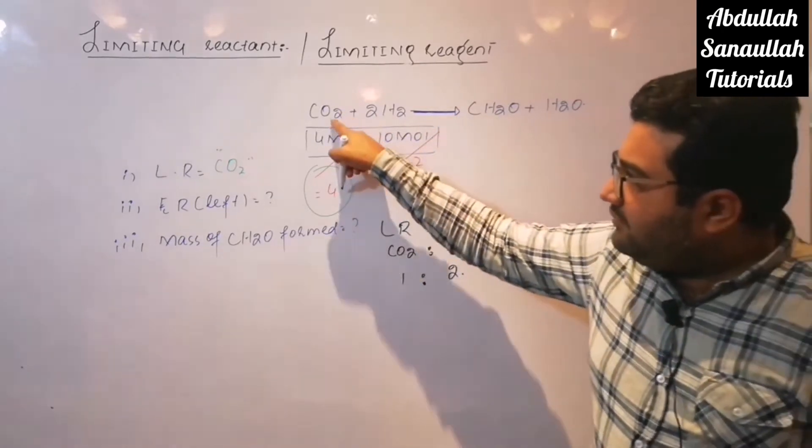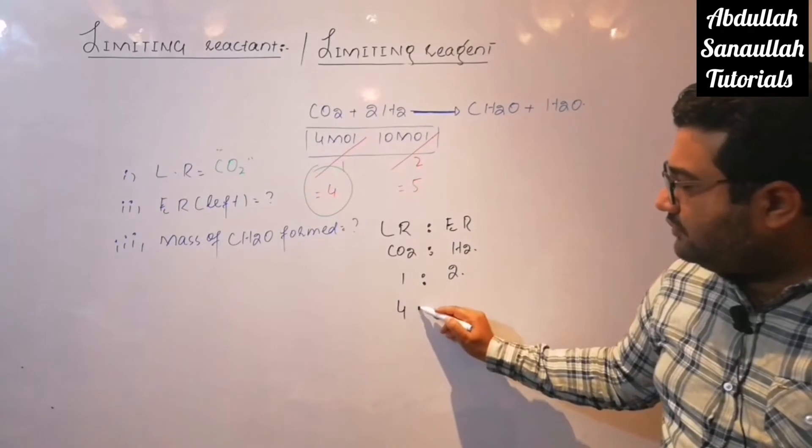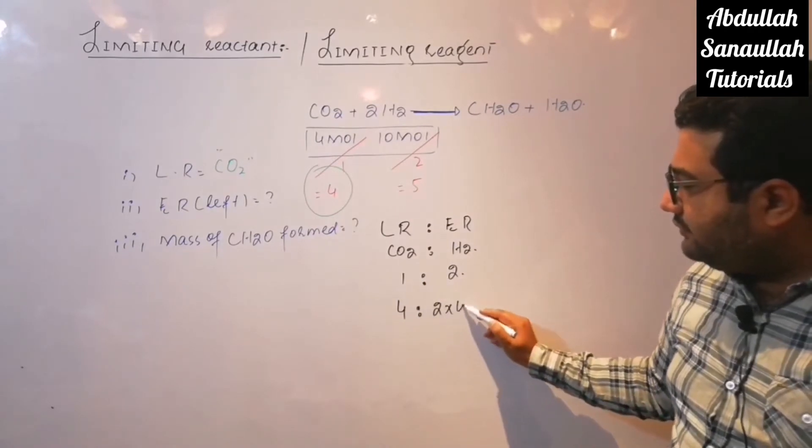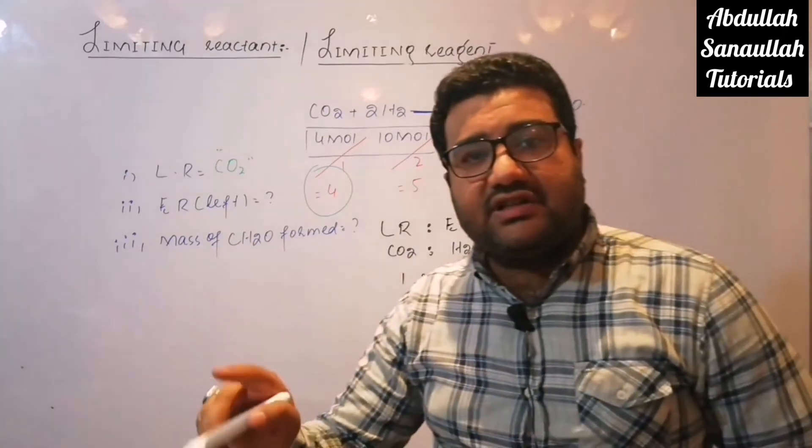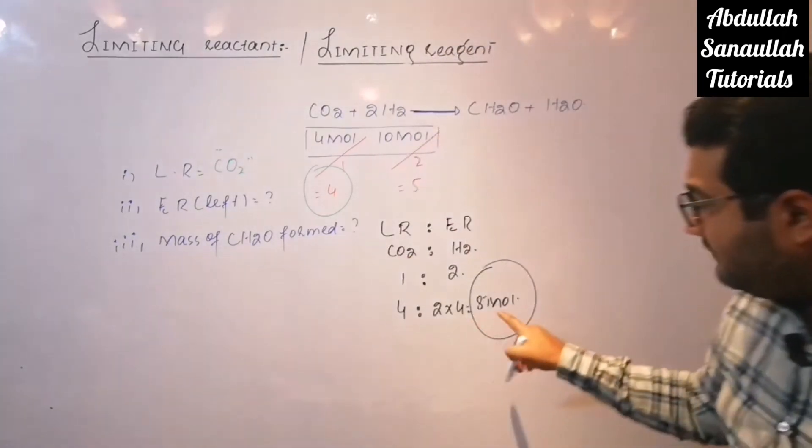And how many moles we have? They are four moles. So four moles will completely react with two into four, eight moles of hydrogen. This is the quantity of the hydrogen which is used. So eight moles are used.